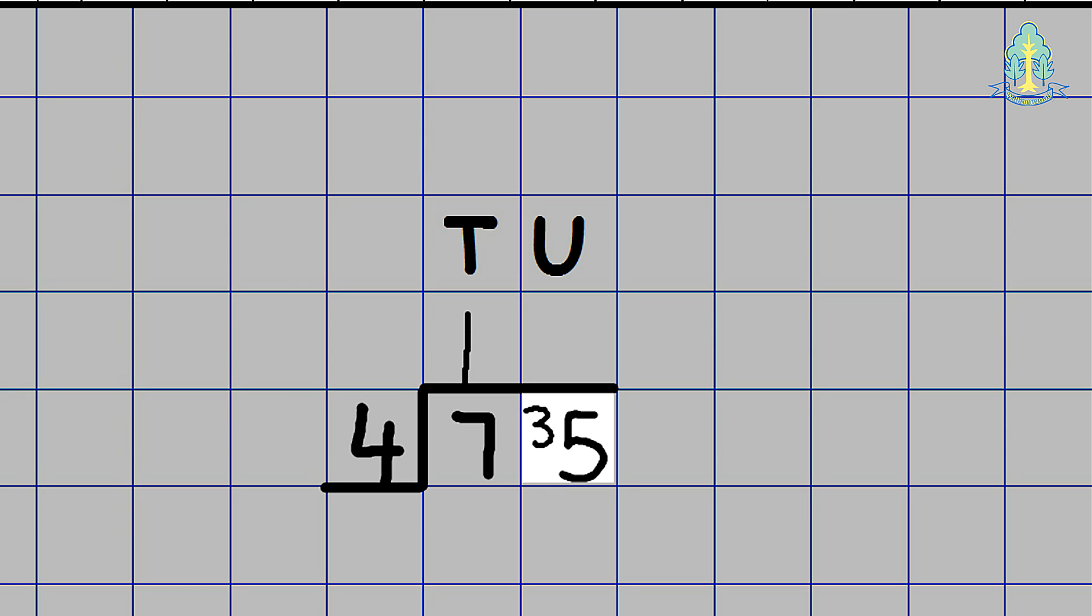We would then say 35 divided by 4 is 8 with 3 left over. The remainder sits on the line and the 3 sits out with the calculation. 75 divided by 4 is 18 remainder 3.